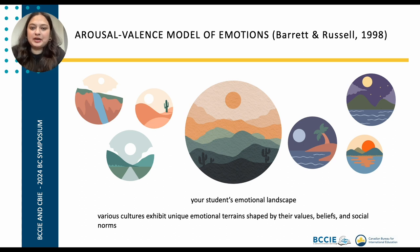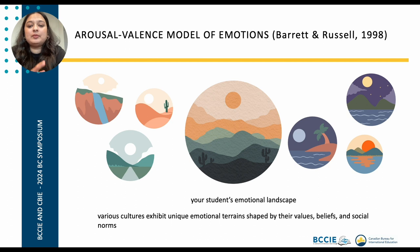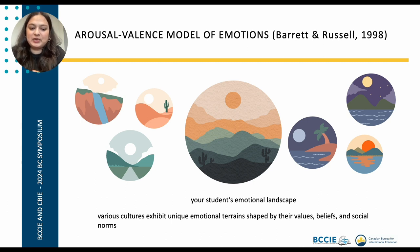I've already talked about our cultural backgrounds and now I want to focus on two key dimensions that define our emotional experiences: arousal and valence. The emotional landscape metaphor helps convey that emotions can be mapped based on their intensity and whether they're positive or negative in nature, creating a multi-dimensional space where various emotional experiences are situated. Just like different terrains in a landscape, different emotional states can be visually represented based on their arousal and valence.